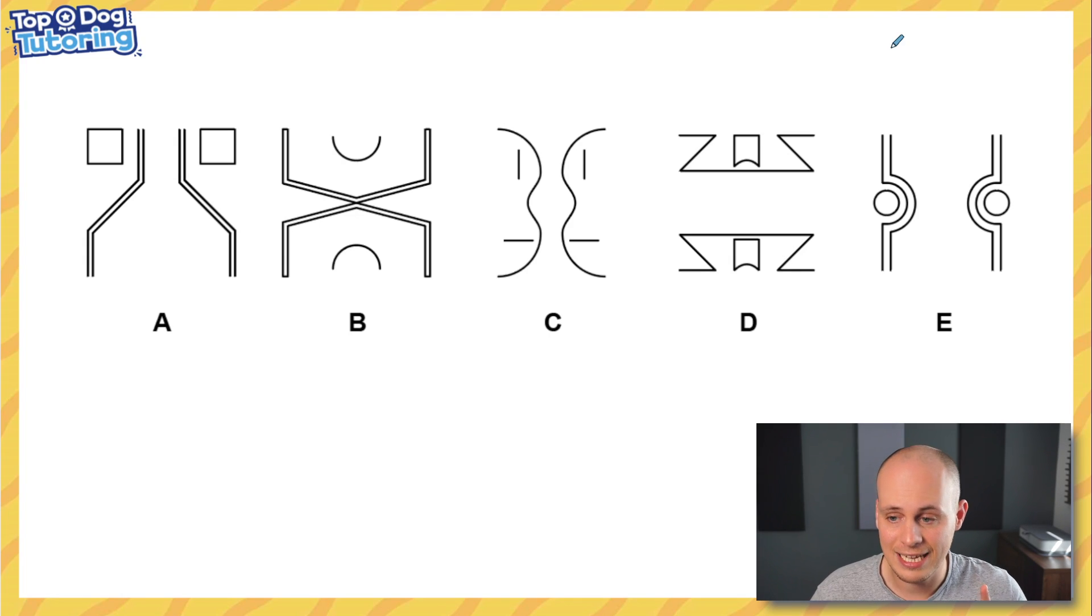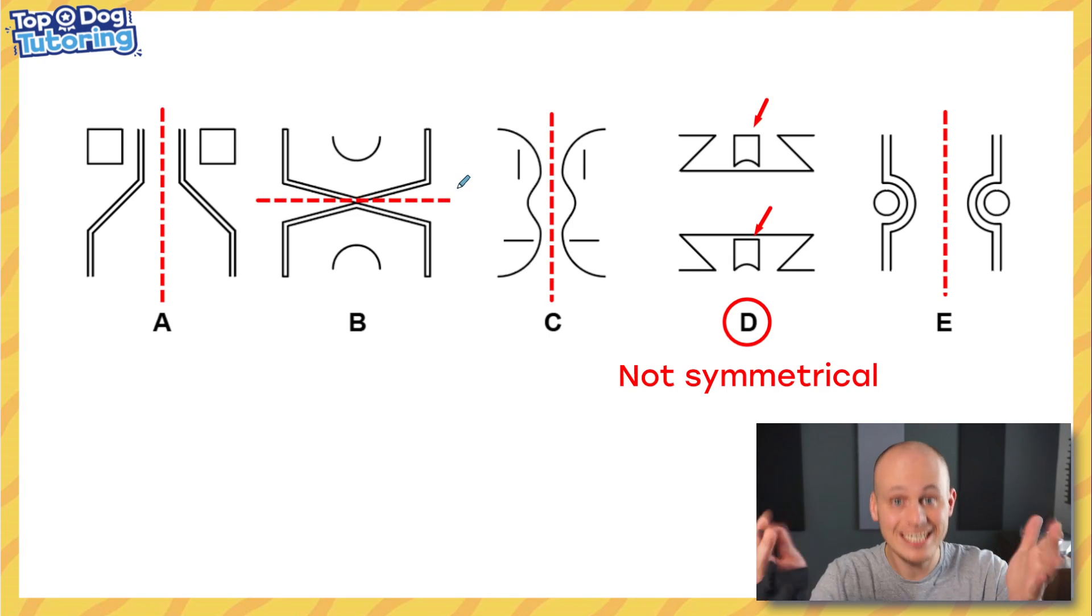Now diving into today's lesson first of all let's recap with Dylan's video from yesterday the question that was at the end for you to solve. It was an odd one out question and the answer was D. Did you get it? The answer was D because the other four figures had a line of symmetry either horizontally or vertically through the middle whereas D didn't because of these little figures here which made them not symmetrical.